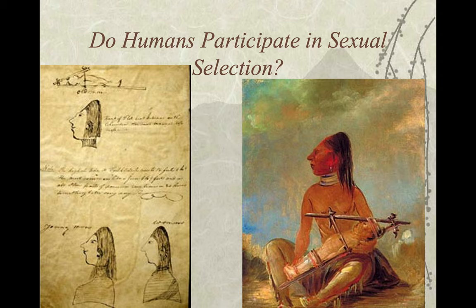Some indigenous people of the Americas would shape their heads. Drawings by Lewis and Clark show a group they referred to as 'flatheads.' There's a Flathead Reservation in the Northwest with the Salish, Kootenai, and Coeur d'Alene. In South America, there are skulls of individuals who had their heads shaped in various shapes — very different, very weird.